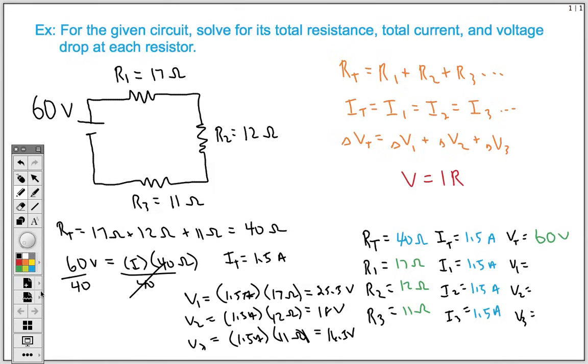So now we can just complete our chart. Voltage 1 was 25.5. Voltage drop 2 was 18. And voltage drop 3 was 16.5.